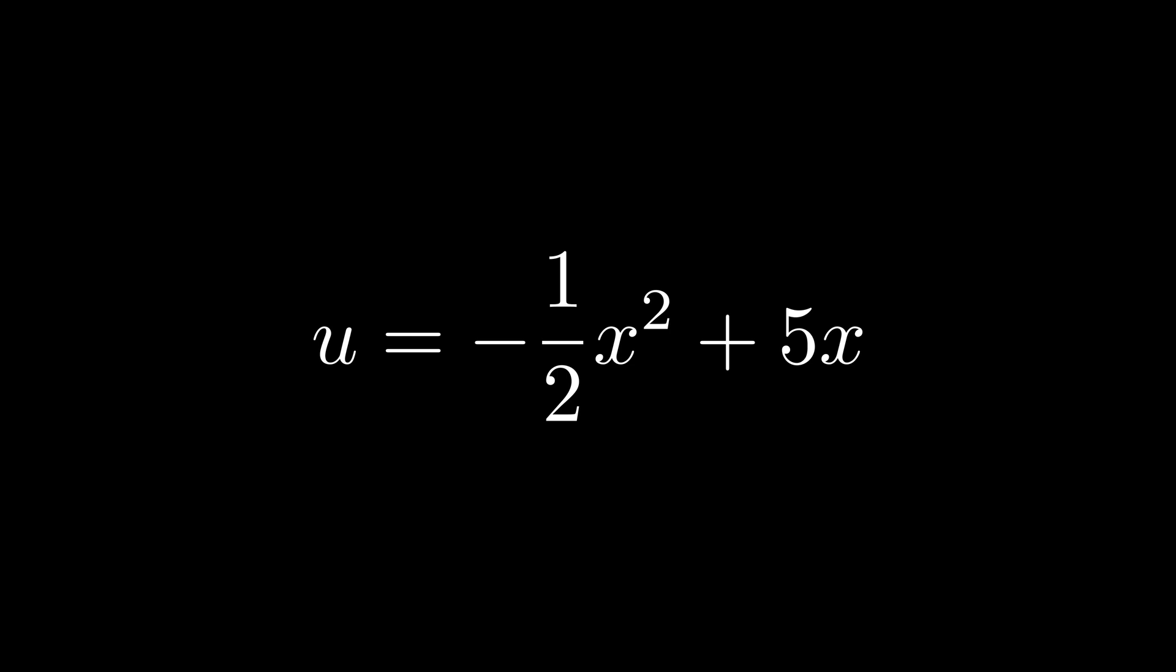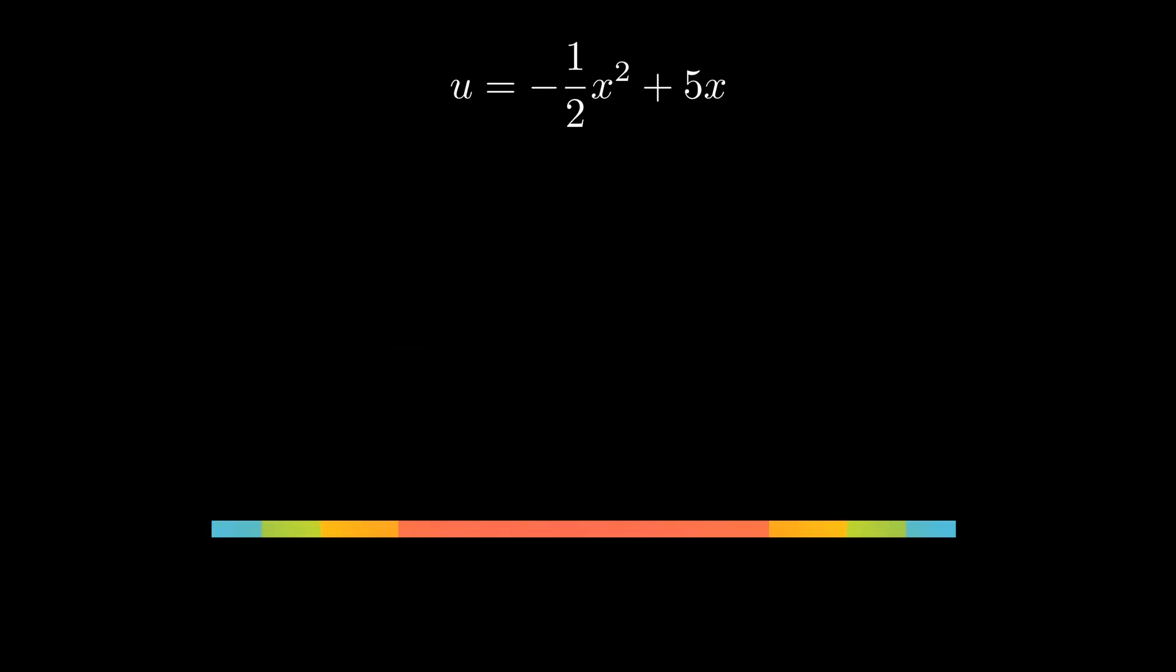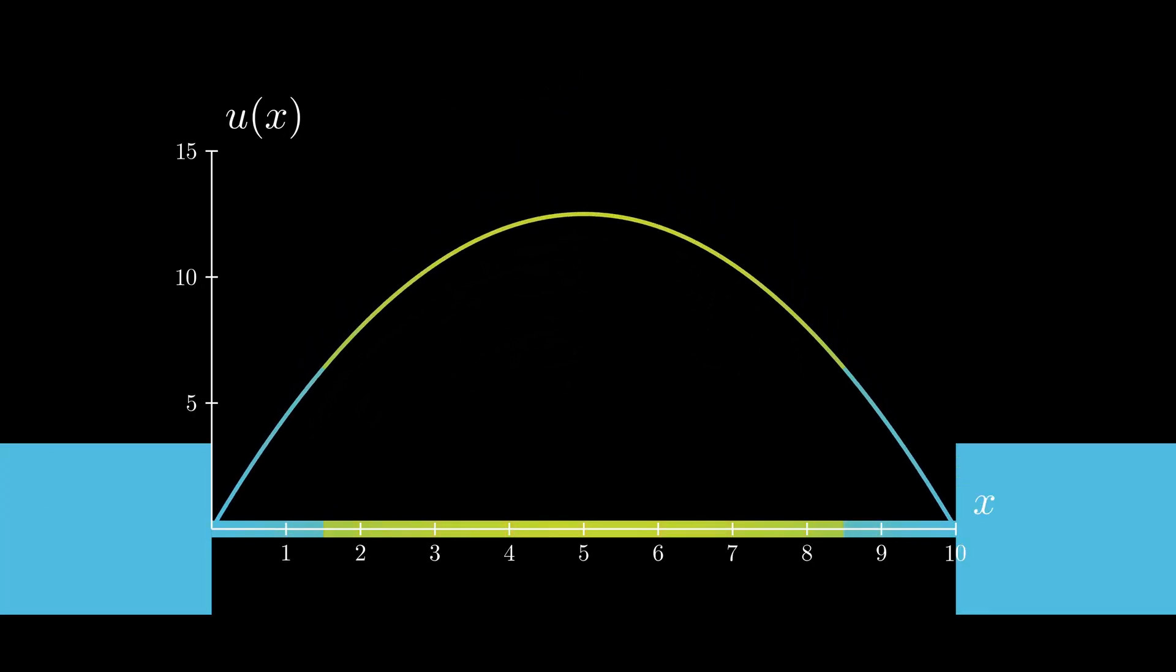A point to note is that no matter what the initial condition is, temperature distribution for the steady state heat equation is dictated mostly by the boundary conditions. This shows how important boundary conditions are to finding the solution.